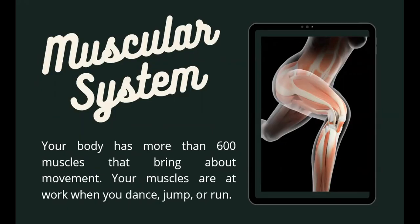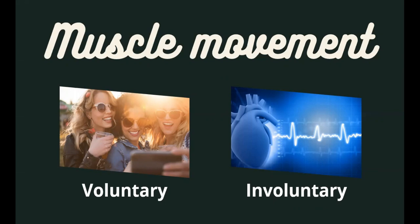Let's move on to the muscular system. Your body has more than 600 muscles that bring about movement — your muscles are at work when you dance, jump, or run. Muscle movement may be voluntary or involuntary. When you smile, lift your hand, dance, run, or walk, voluntary muscles are at work. Your heart beats on its own and cannot be controlled because it is made of involuntary muscles.